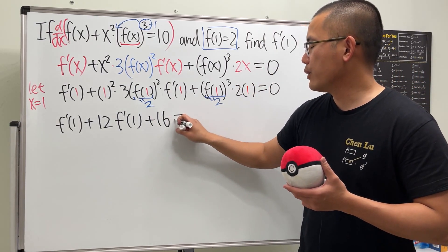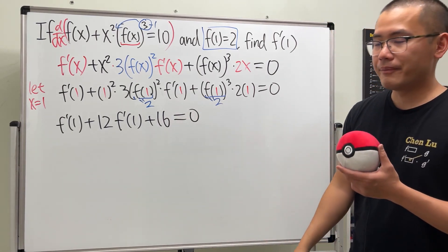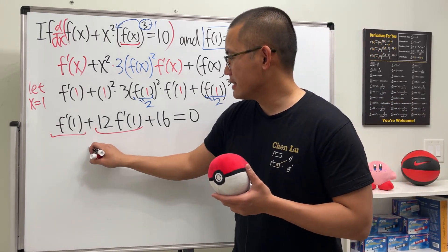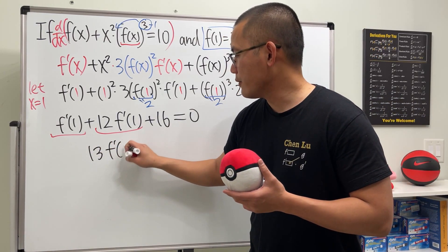So we add 16, and all in all this is equal to 0. Yeah. Okay, have a look. This and that, we can combine terms. So this is 13 f prime of 1.